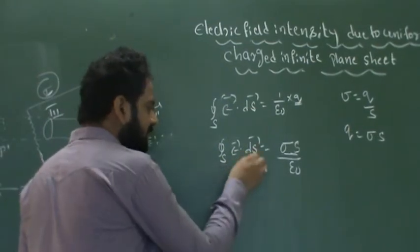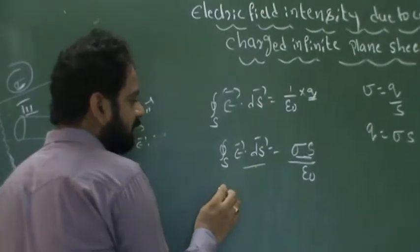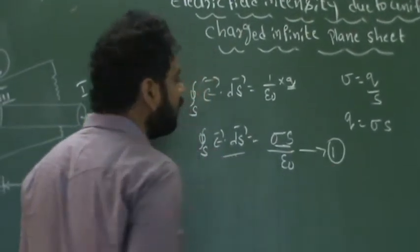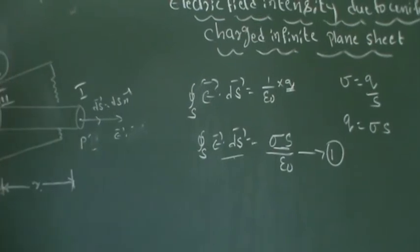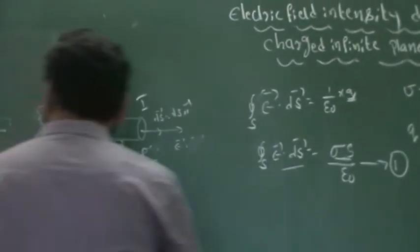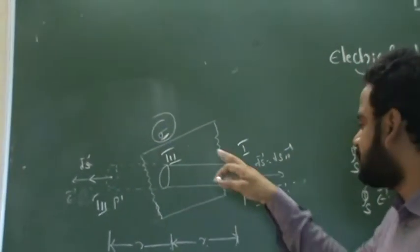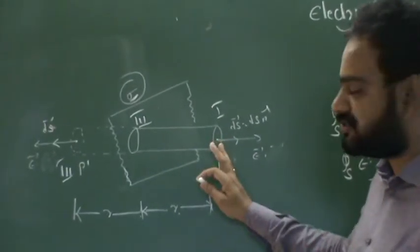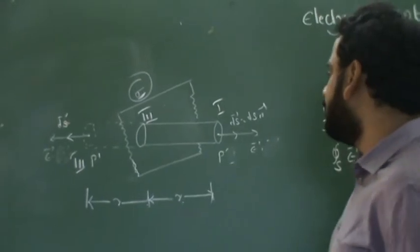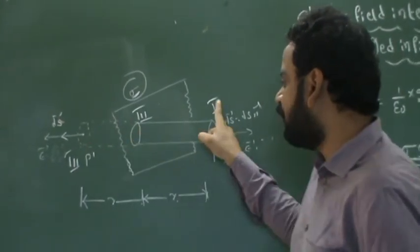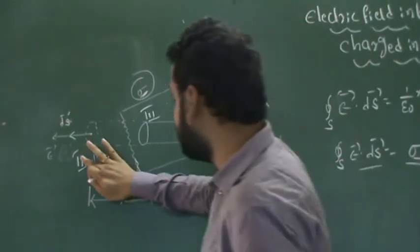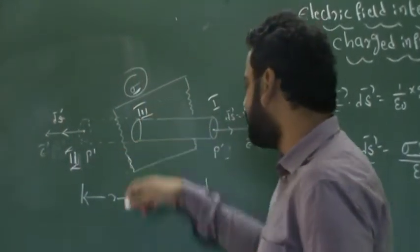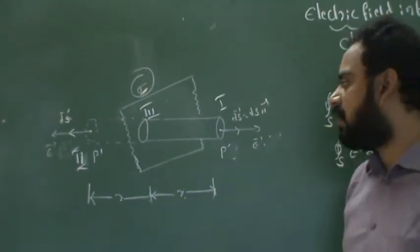This expression is called equation number 1. Now, looking at the diagram, this plane sheet is divided into 3 parts: end caps 1 and 2, and the curved lateral surface in the center, which is called part 3.